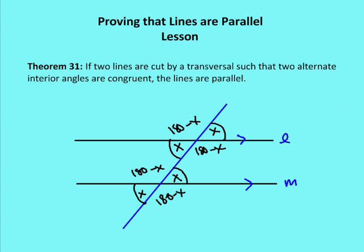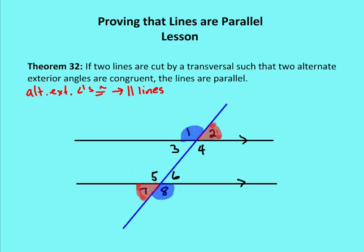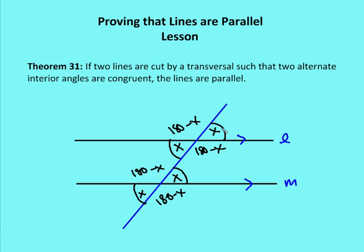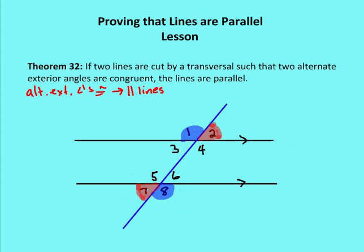Theorem 32: if two lines are cut by a transversal such that two alternate exterior angles are congruent, then the lines are parallel. Going back to our diagram, alternate exterior angles are located on the outside of the two lines on opposite sides of the transversal. So if angle 2 is congruent to angle 7, then line L is parallel to line M. You can write this shorthand as: alternate exterior angles congruent implies parallel lines.